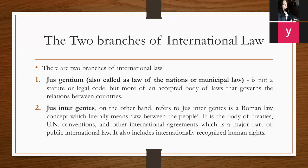What is jus inter gentes? On the other hand, it refers to a borrowed concept from Roman law, which literally means 'laws between the people.' It is a body of treaties, UN conventions, and other international agreements, which is a major part of public international law.